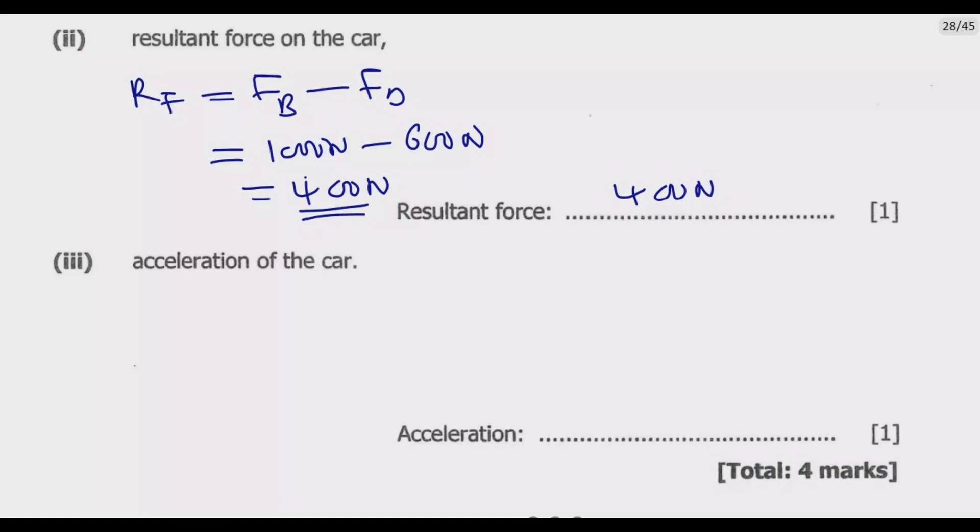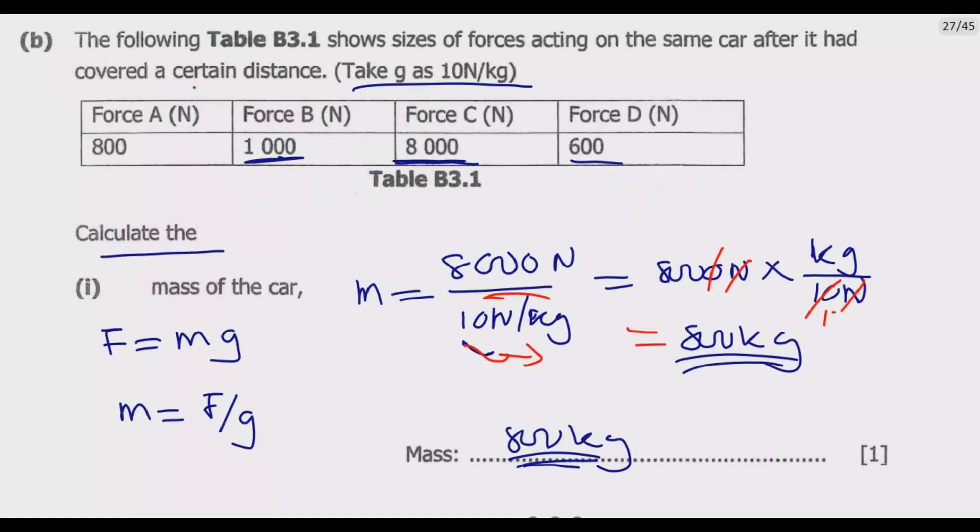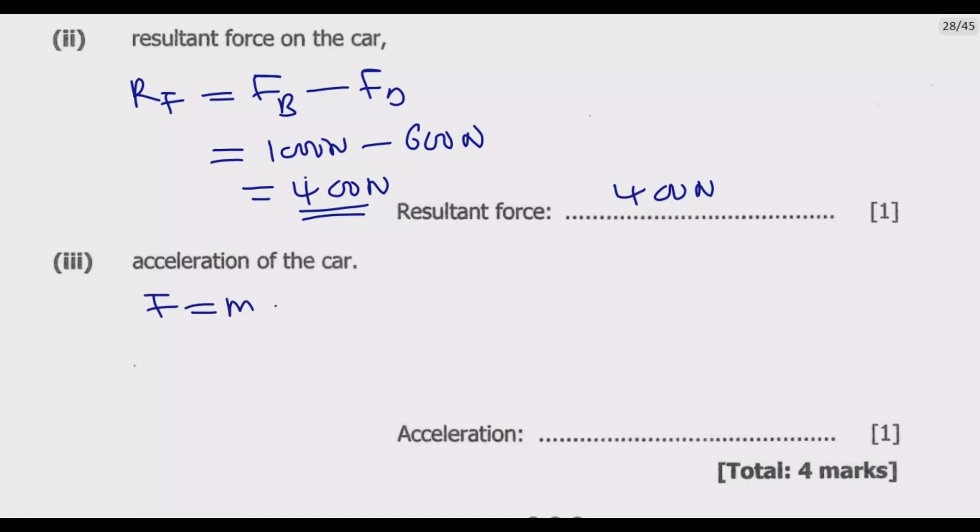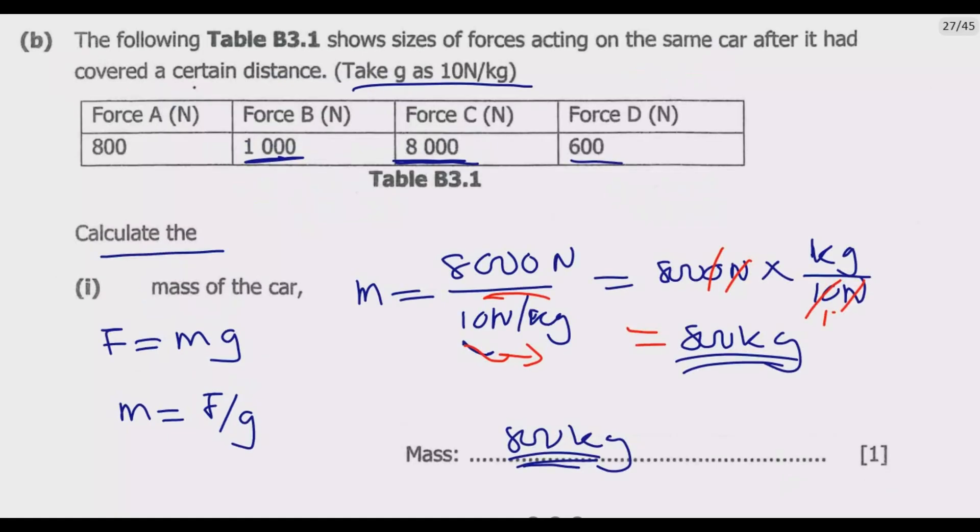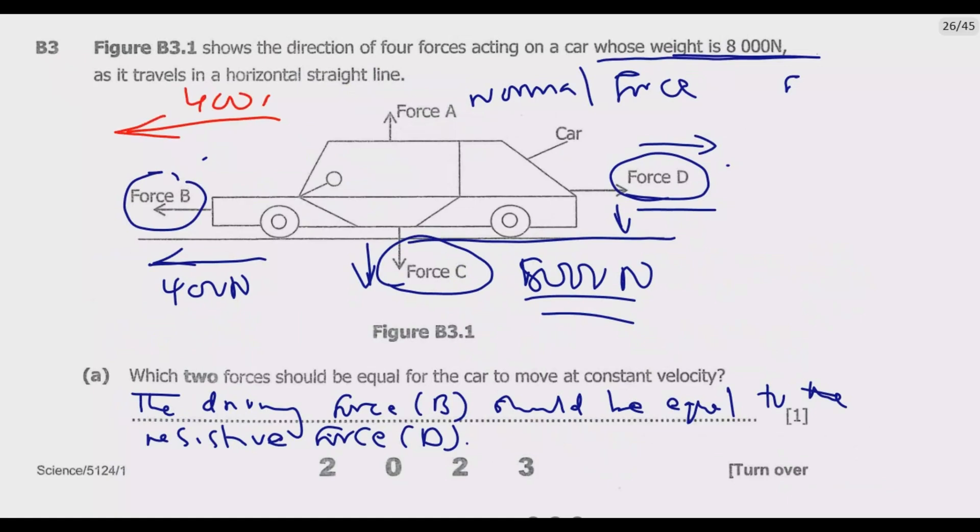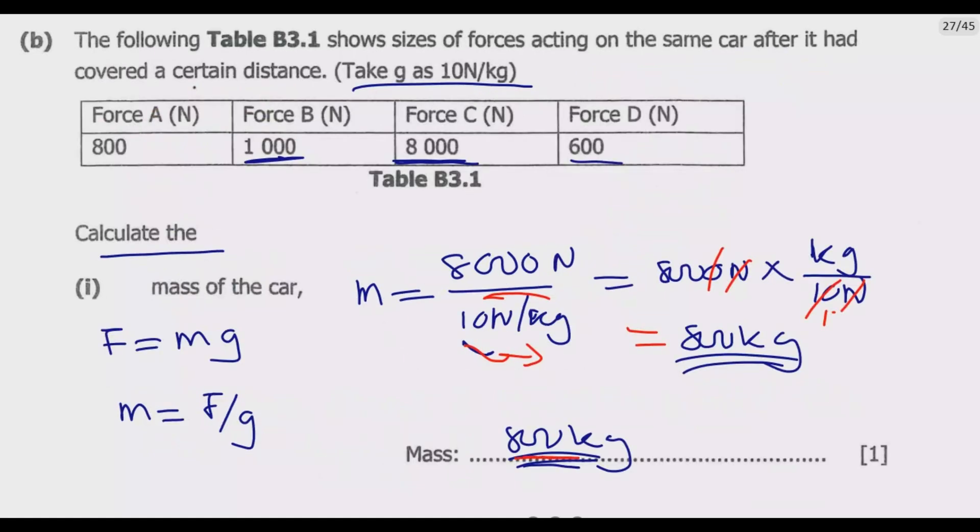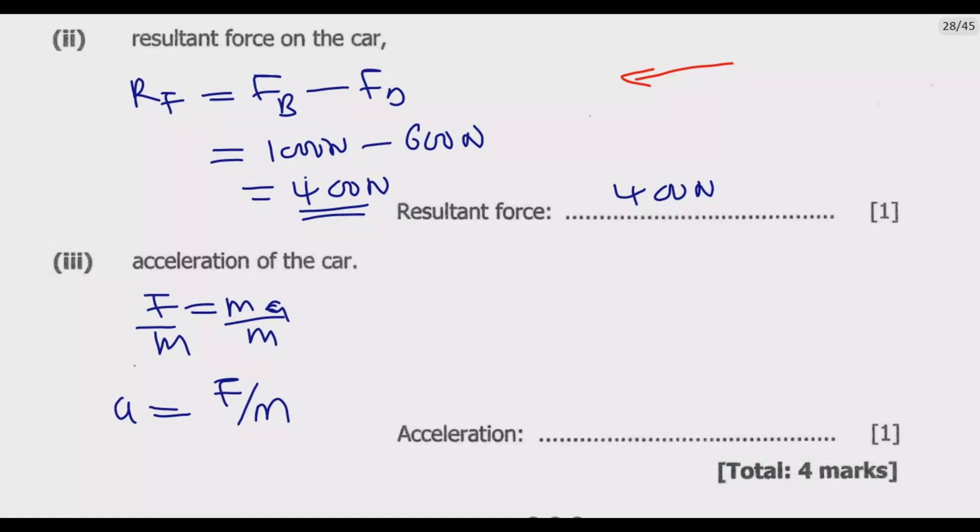Roman numeral three: calculate the acceleration of the car. To find the acceleration of the car, we use force equals mass times acceleration. We're looking for acceleration, so we divide by m, meaning acceleration equals force divided by mass. We know the resultant force - it's moving in this direction according to the figure. The resultant force is 400 newtons like we said, and we've just calculated the mass of the car to be 800 kg. So it's just a matter of substituting. Hence acceleration equals 400 newtons divided by 800 kg, which equals 0.5 meters per second squared. This is the value of acceleration.